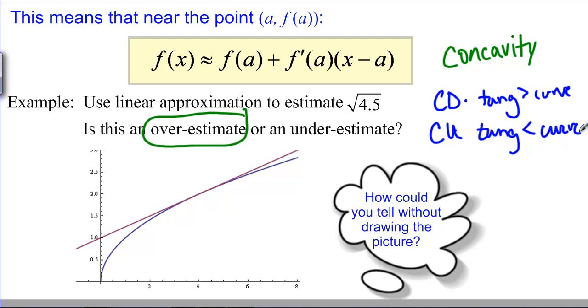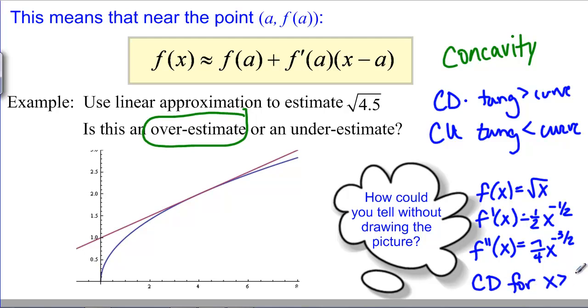What that means for us is if we took the second derivative of F of X equals the square root of X, the first derivative was 1 half X to the negative 1 half and the second derivative is negative 1 half X to the negative 3 half. We can see that this is a negative second derivative when we put in positive values of X. It's concave down for X bigger than 0 which is really all the ones we care about. Concave down means the tangent line is bigger than the curve, which means that our estimate, which is plugging into the tangent line, our estimate is bigger than the actual value.